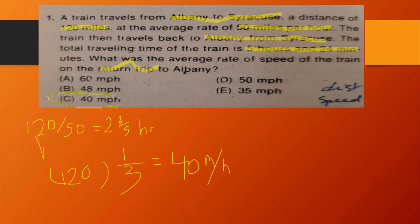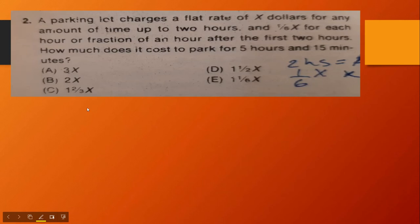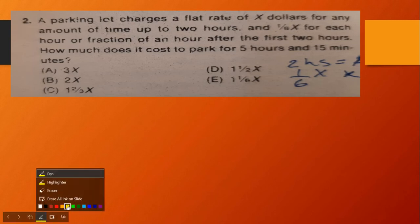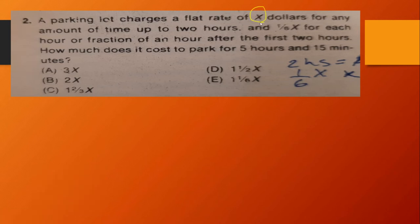So the right answer is C. Number two: a parking lot charges a flat rate of x dollars for any amount of time up to two hours, and one-sixth x for each hour or fraction of an hour after the first two hours. How much does it cost to park for five hours and fifteen minutes?